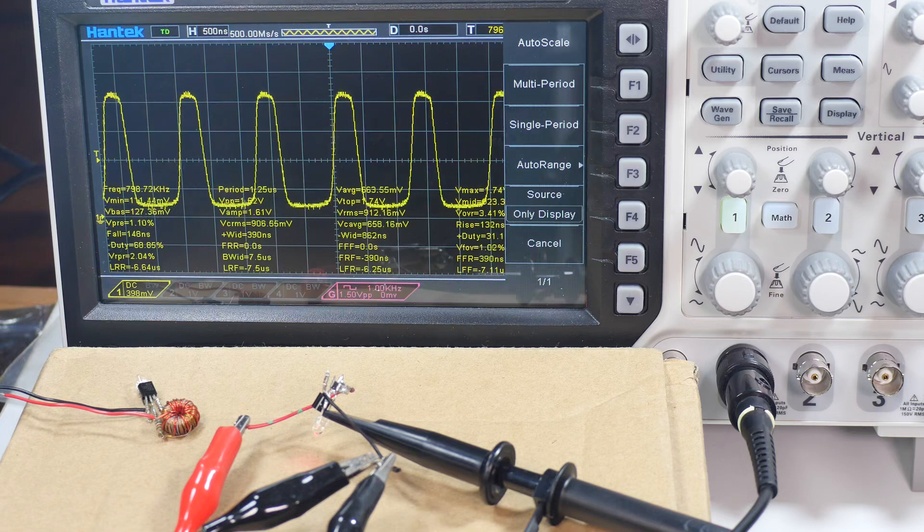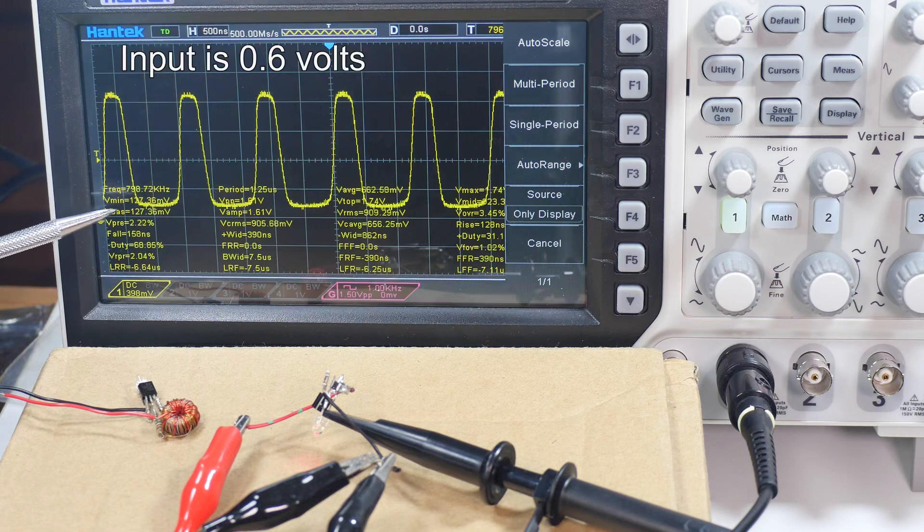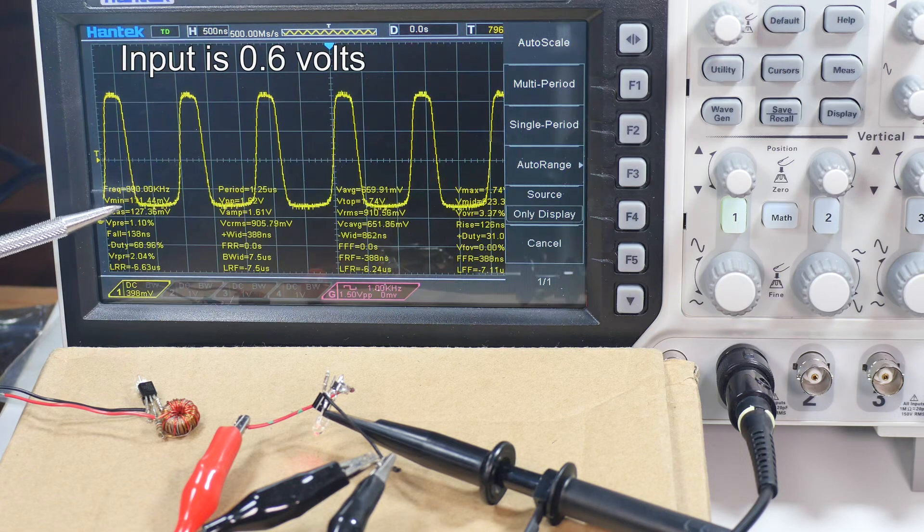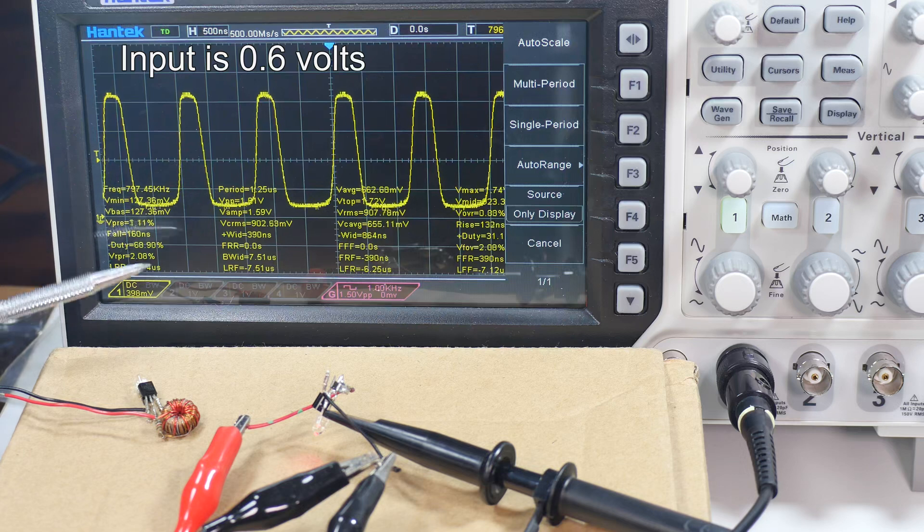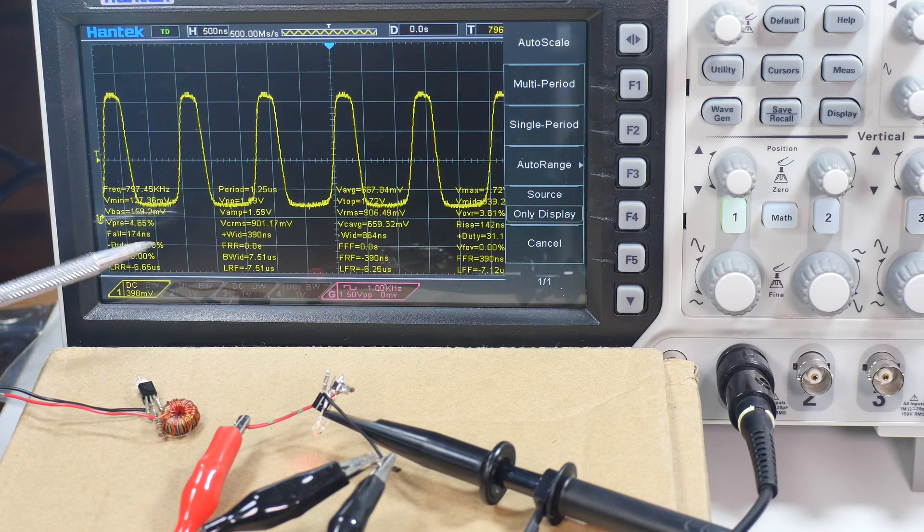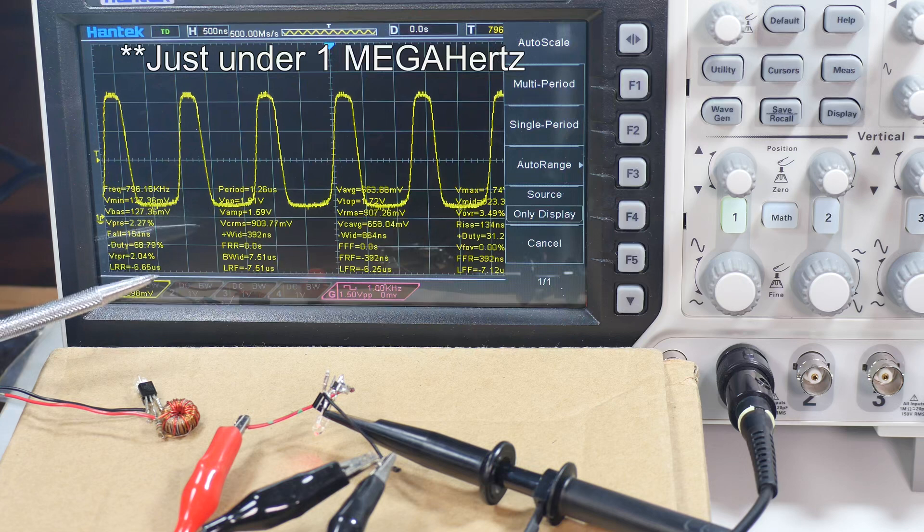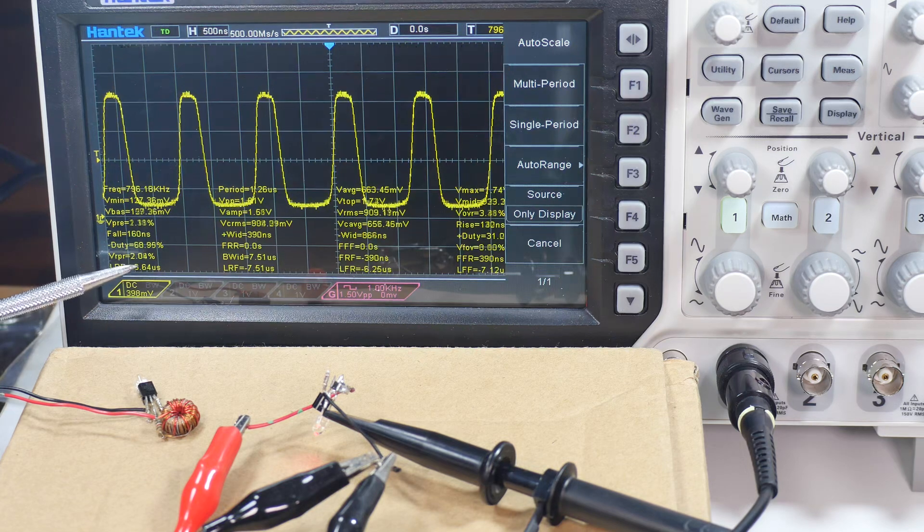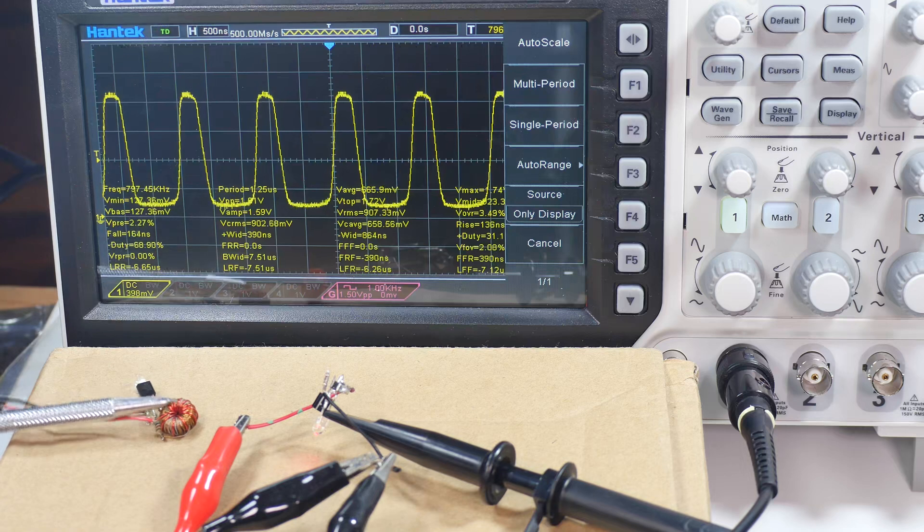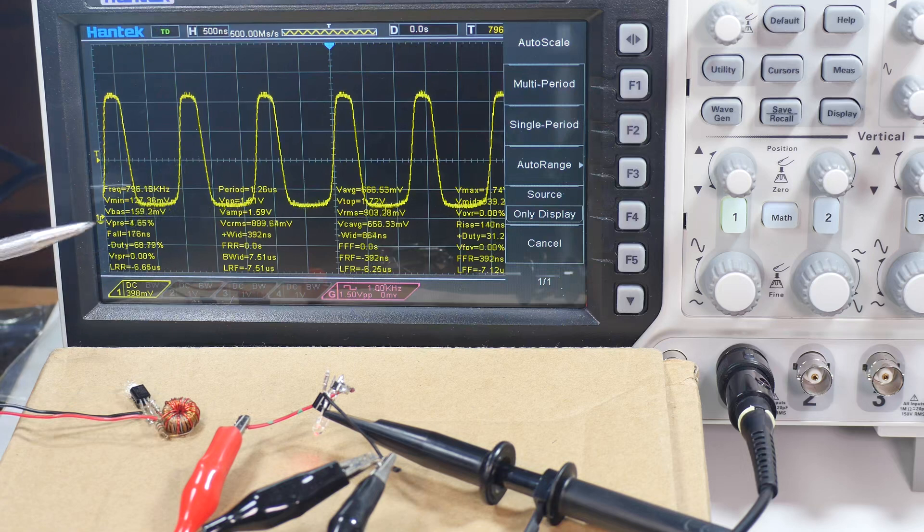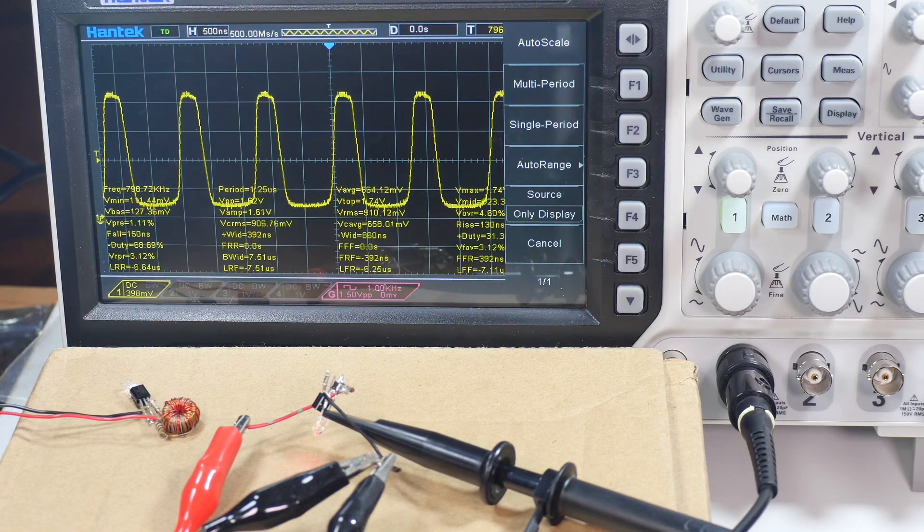At 0.6 volts it got a lot more stable. It's right around 790 kilohertz, so hovering just under one megahertz. Duty cycle is about 69%, so a little higher than these which run about 50% duty cycle. But a nice clean wave, nice steady wave. Now let's bump it up to 0.7 and see what it does.